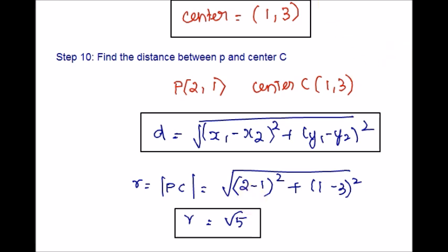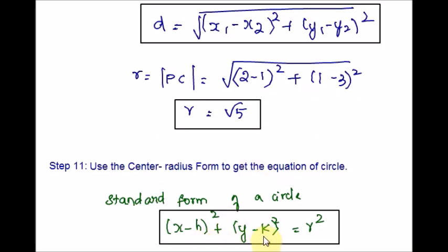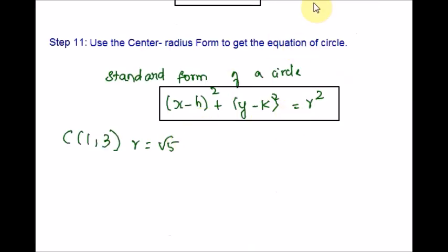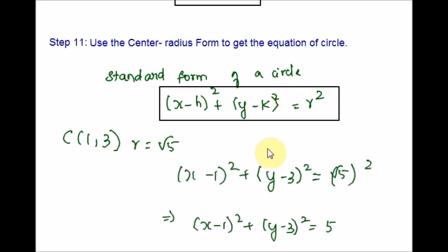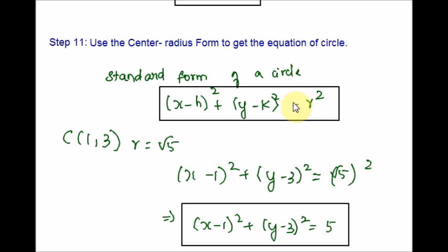We have the center and radius now. Just plug them into the standard equation of the circle — the center-radius form, where H and K is the center and R is the radius. Plugging in those values gives us the equation of the circle passing through the three points P, Q, and R, using midpoints, slopes, and perpendicular slopes. That is it for this problem — just 11 simple steps.